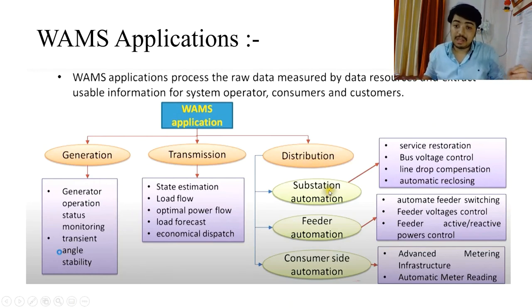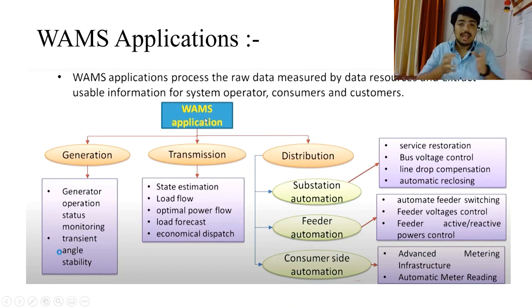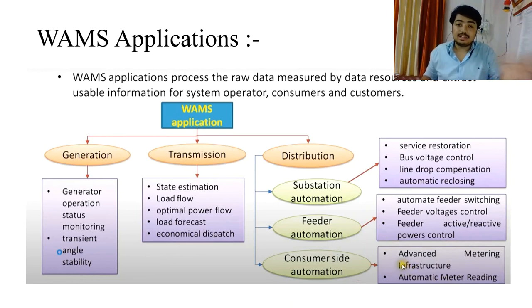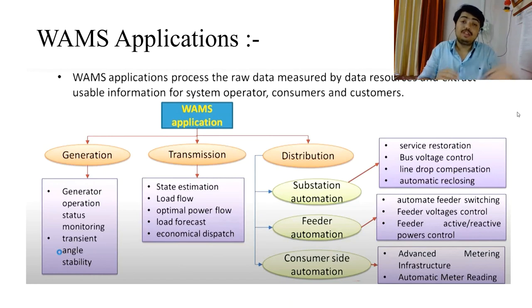The third application area is distribution. This includes substation automation — service restoration, bus voltage control, line drop compensation, and automatic closing. It also covers feeder automation, consumer side automation, and advanced metering infrastructure. WAMS has all the data on what voltage and current a user is drawing and the phase angle, so it can calculate the power taken from the grid and perform automatic meter reading — no worker needs to visit and manually read the meter. With WAMS, a PMU at the user's premises sends all data to your PDC, allowing you to generate the monthly bill automatically. These are the basic applications of WAMS, which is very important for future smart grids.